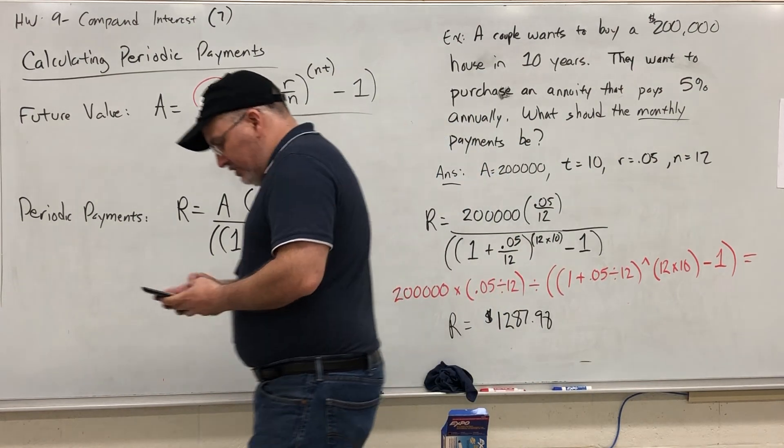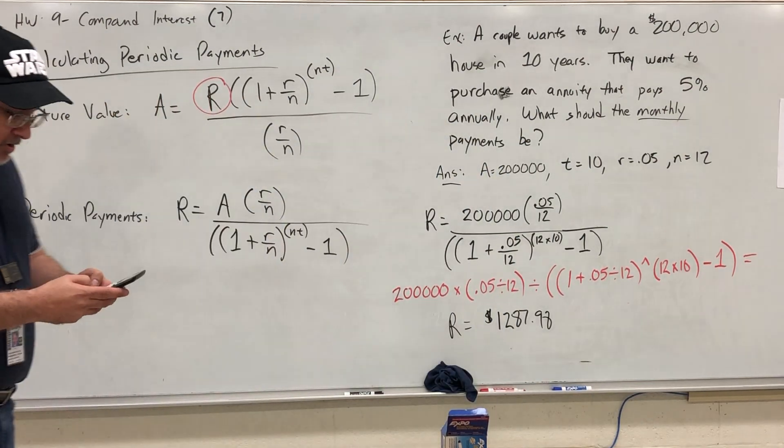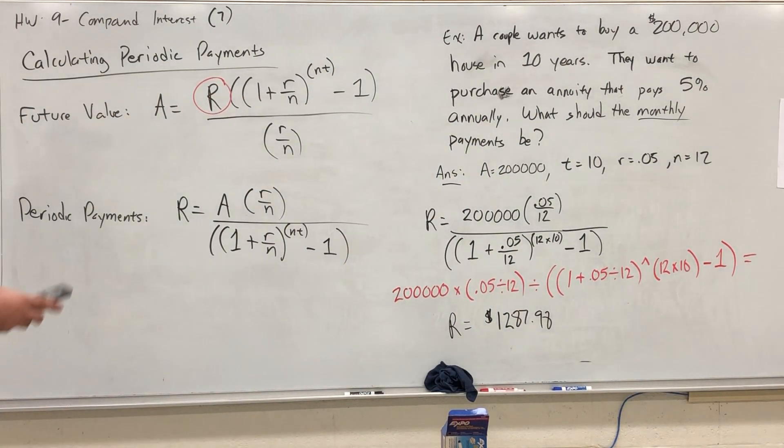But I will do it one more time just to make sure. 200,000 times parenthesis, 0.05 divided by 12, close parenthesis, divided by, open open, 1 plus 0.05 divided by 12, close, exponent, open, 12 times 10, close, minus one, close, equals. Same answer.